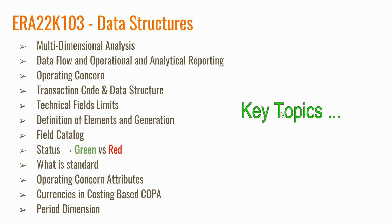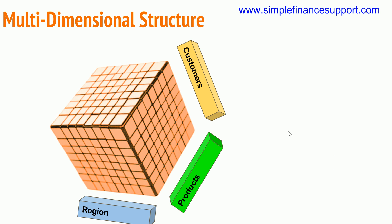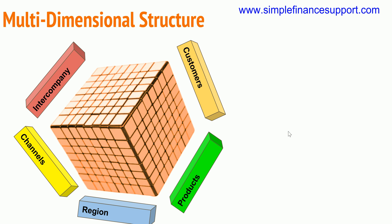We'll also cover currencies and other period dimensions. The data structure in COPA has a multi-dimensional structure which includes customers, products, regions, channels, intercompany, and industry. Within customers you may have customer groups, customer class, customer types, and within products: product groups, product types, product classes, hierarchy, etc.